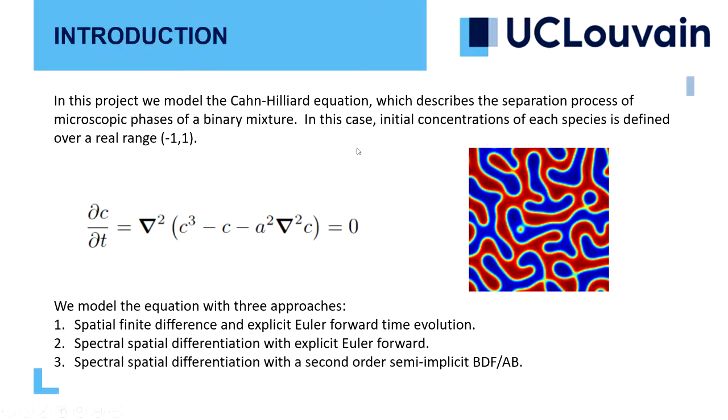To solve this phenomenon, we are using three approaches. The first one is in the space domain using Euler forward time evolution method. Then we use two schemes in the Fourier domain. The first one is also an explicit Euler forward method, and to see more stability in the equation, we implemented a second order semi-explicit BDF/AB scheme.